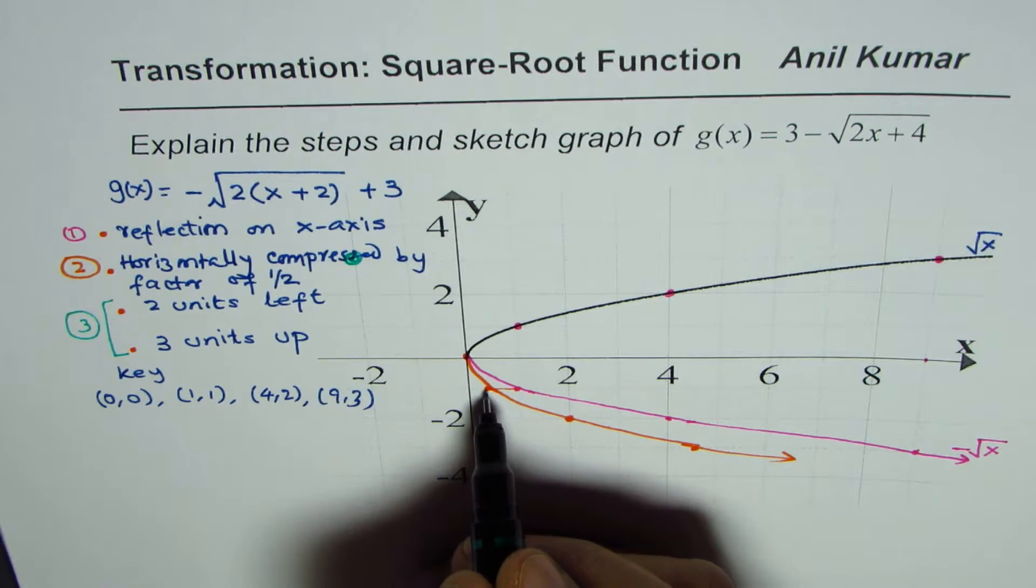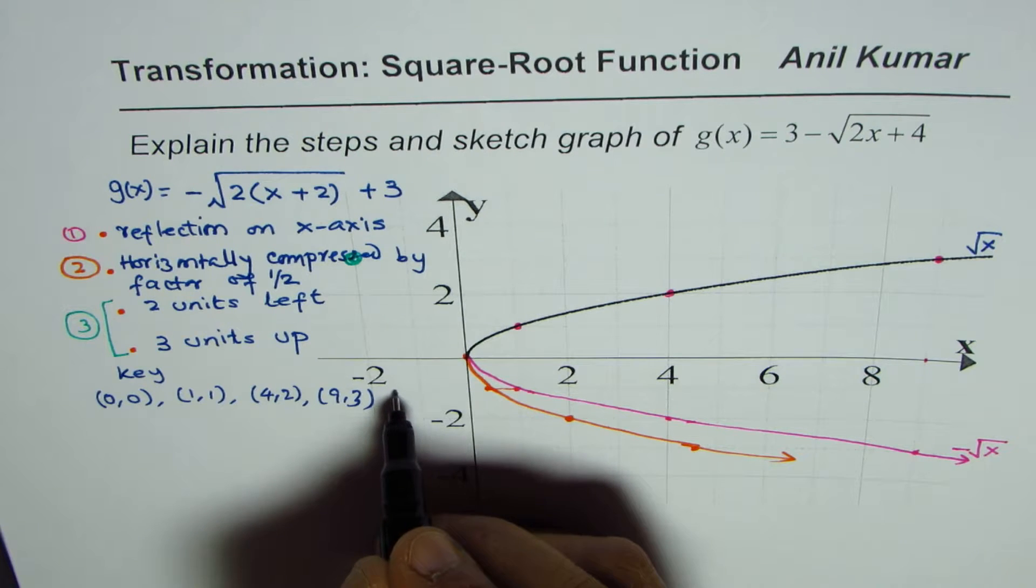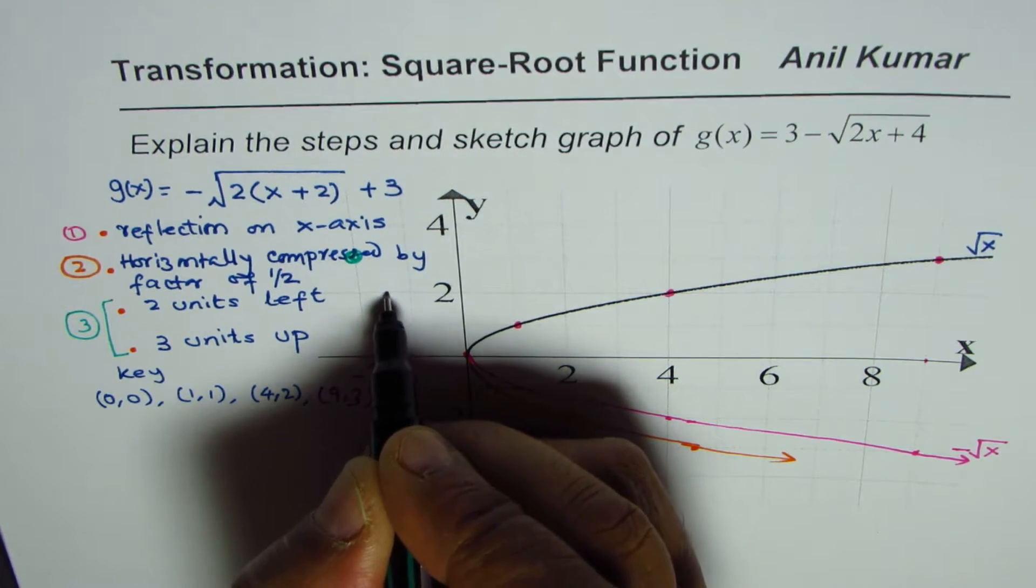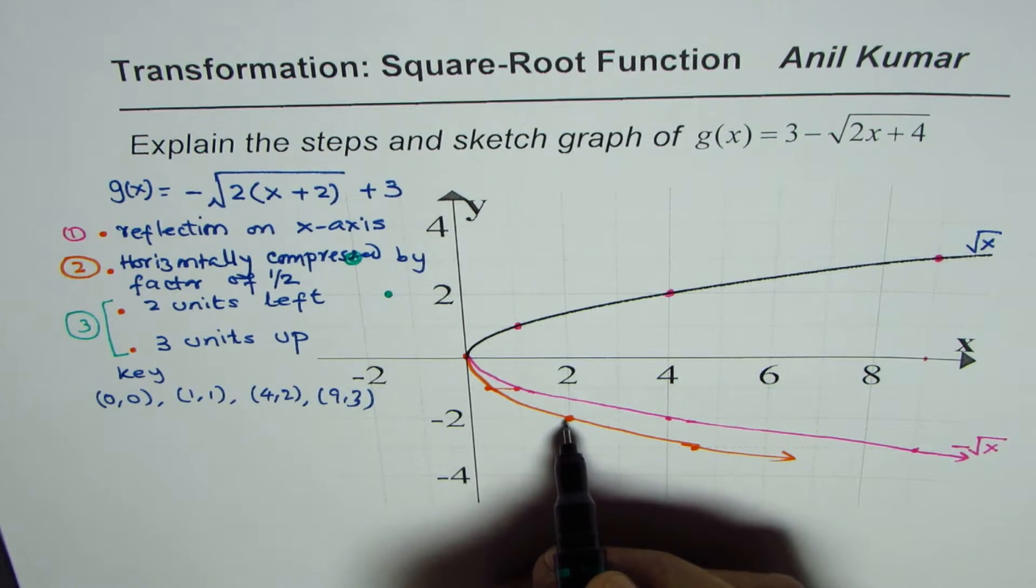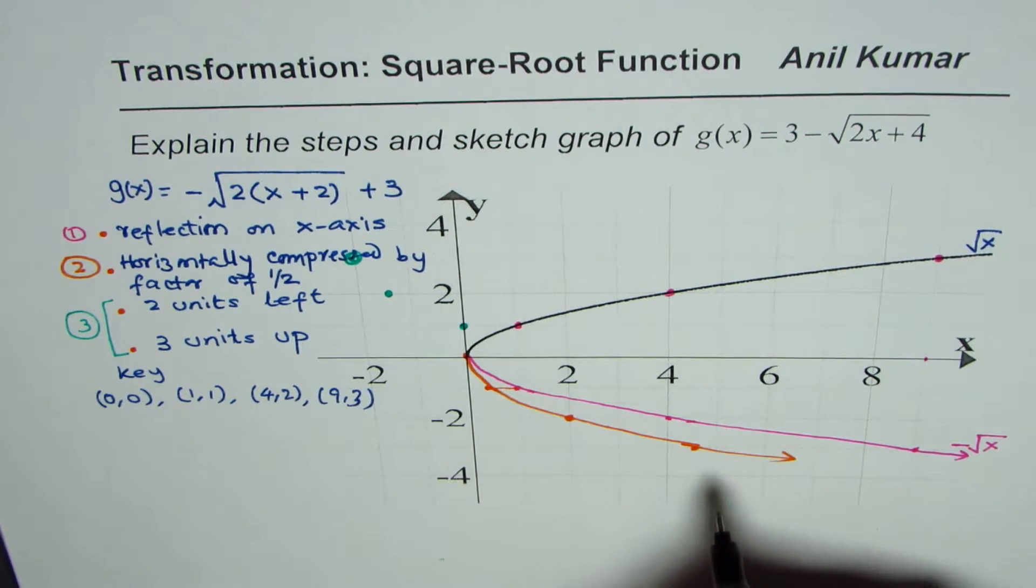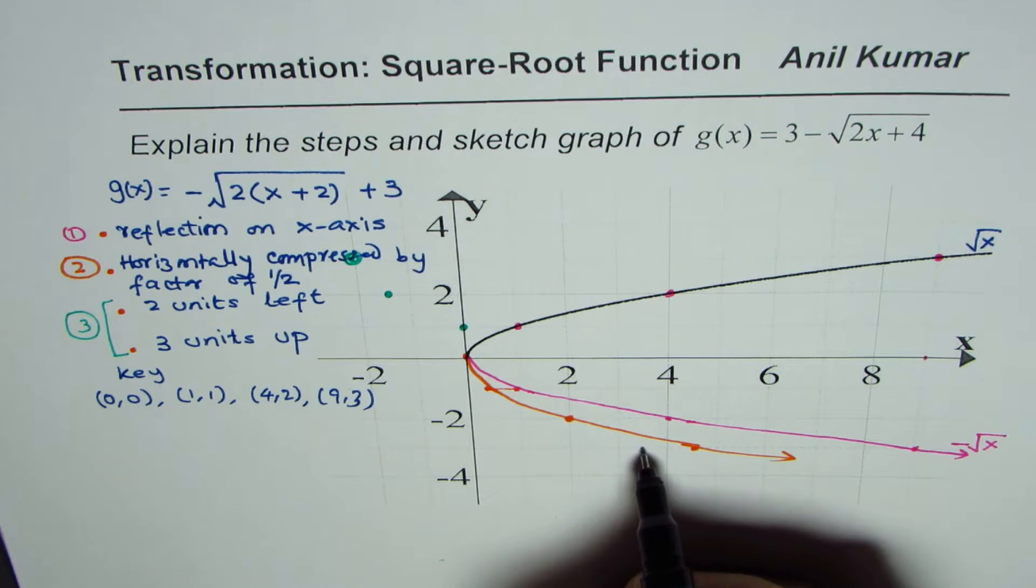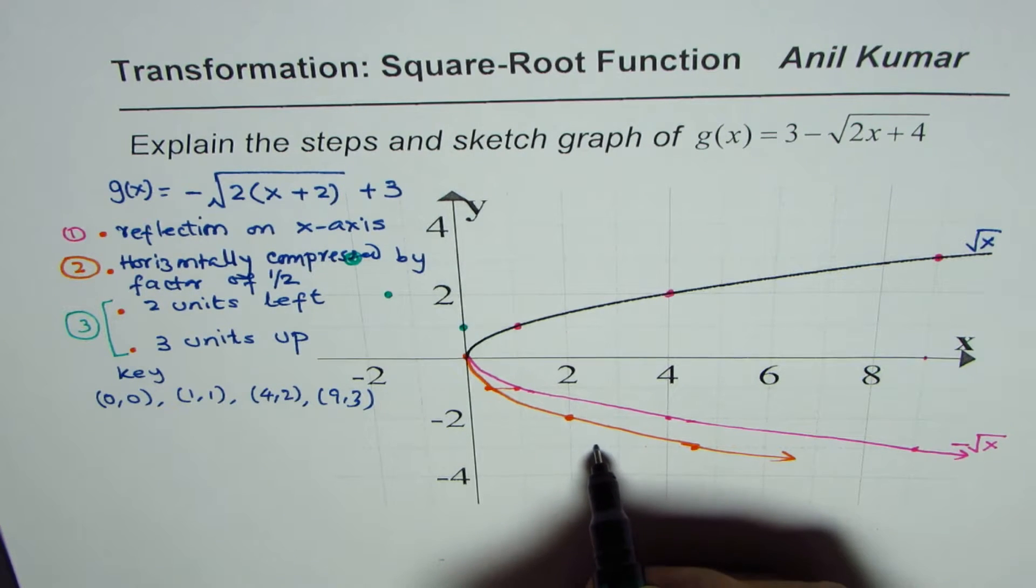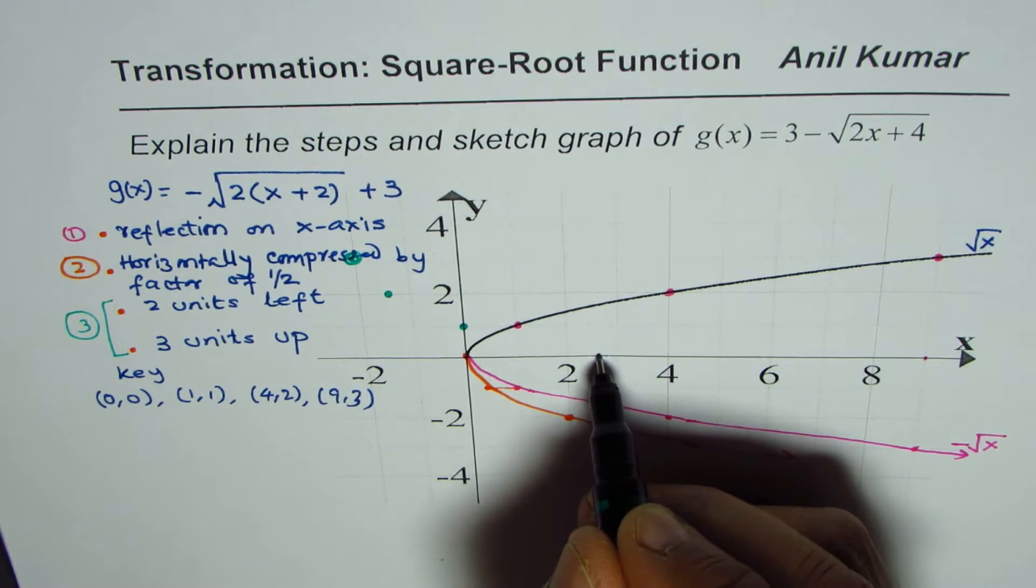Now this is the next point, which is at 4.5, so this will be two units left and three units up, so it'll come there. And then we have here at 2—two units left, three up—there we go. And then this is at 4.5, so it is 3.5, one, two units left and three units up, so it is at the x-intercept.